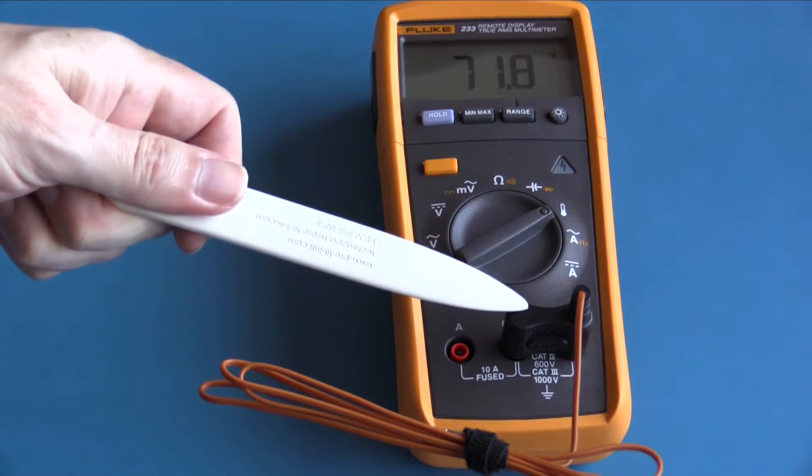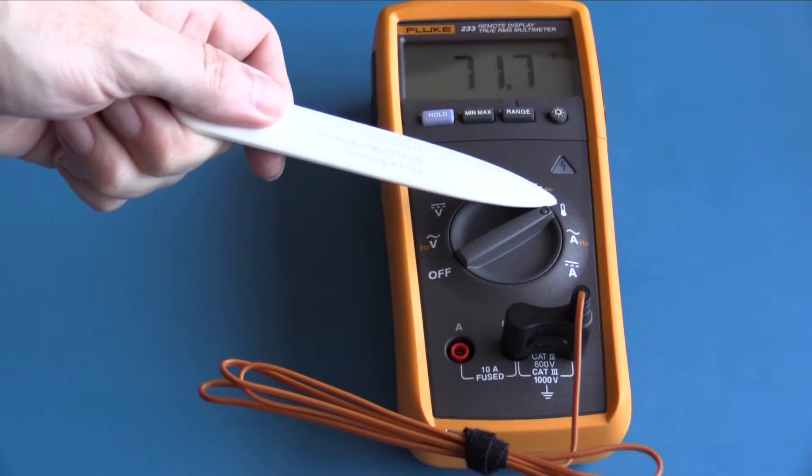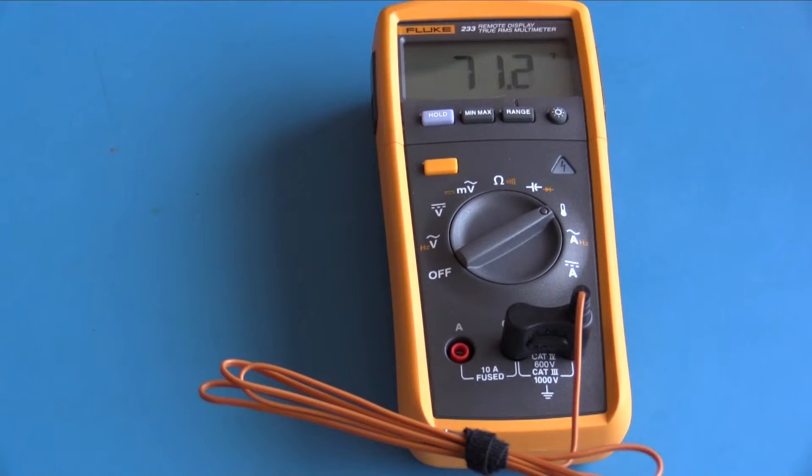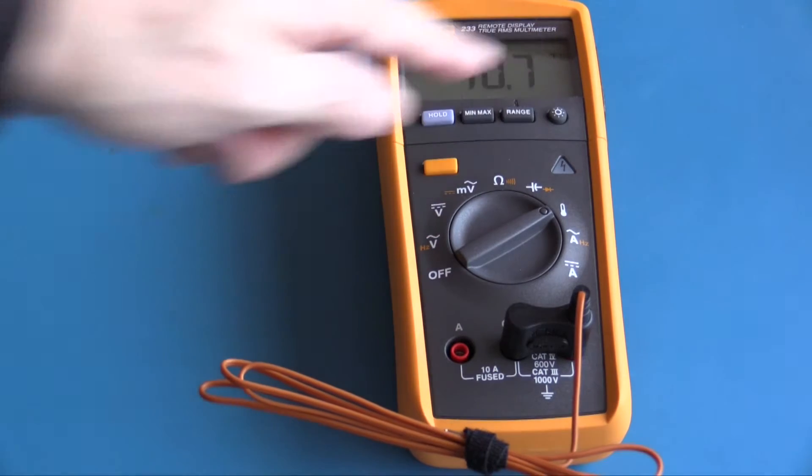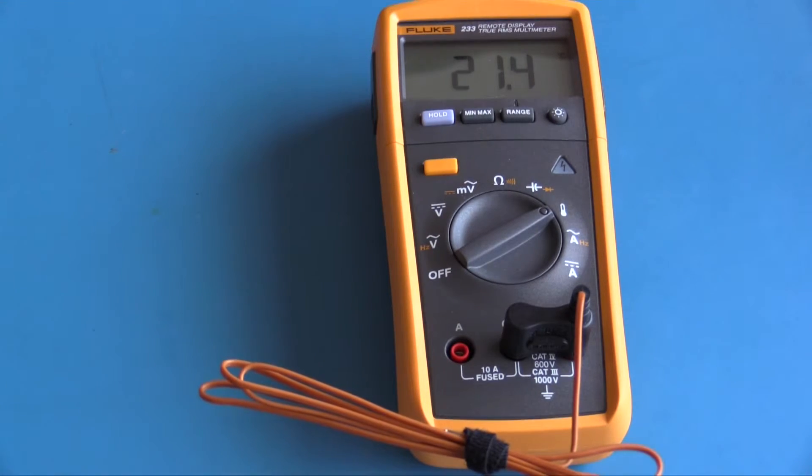I now have a thermocouple connected to the meter and I have selected the temperature range. The actual temperature in here is 67 degrees Fahrenheit. If I press the range button, I can get that reading in degrees Celsius.